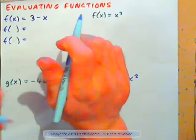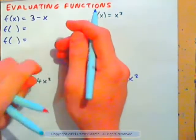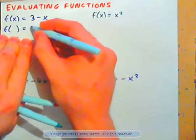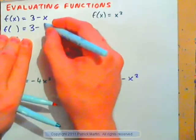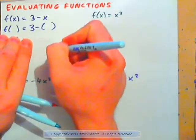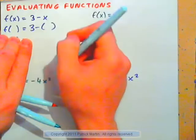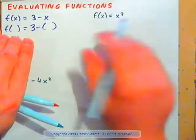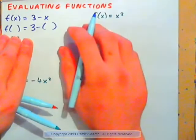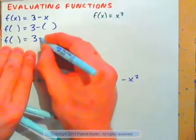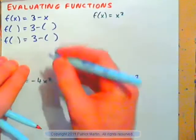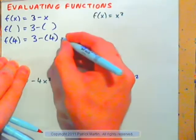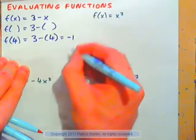f of x equals 3 minus x. What I like to always write down is f of parentheses. f of an empty parentheses would be 3 minus empty parentheses. So, in place of x, we can always put parentheses, and that really helps us, because then we can just use what we learned in Chapter 2. So, f of 4 — where would the 4 go? It goes in the parentheses. So, you have 3 minus 4, and 3 minus 4 is negative 1.